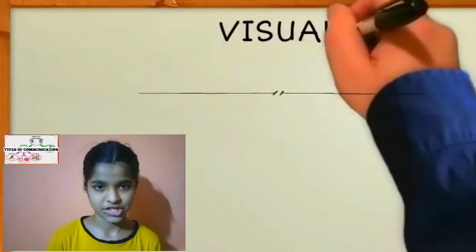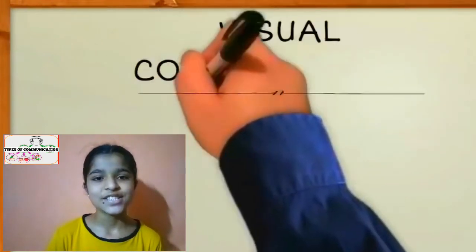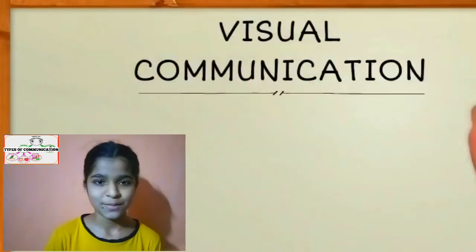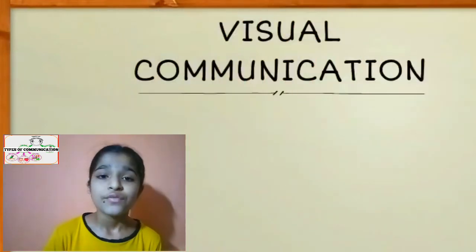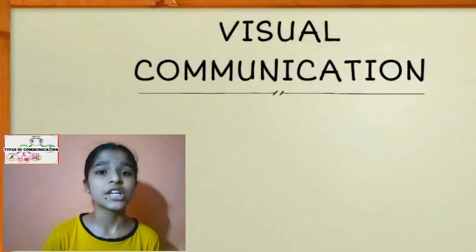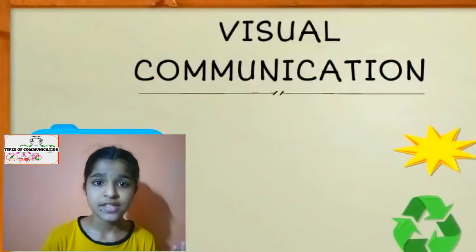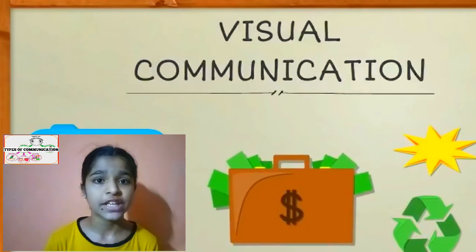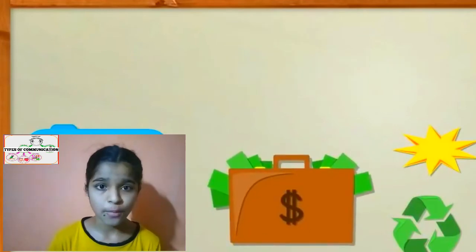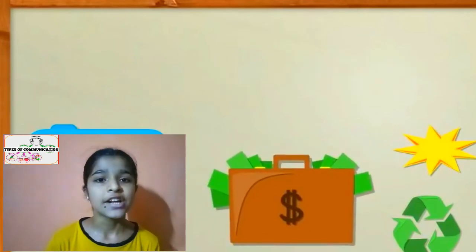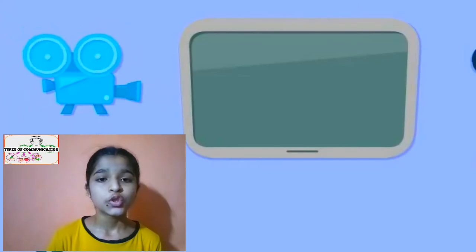The fourth and last type of communication is visual communication. Visual communication involves maps, graphs, charts, and photographs from which we can get information and share it with each other.